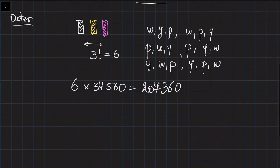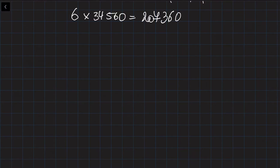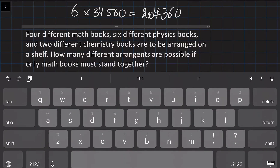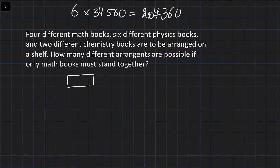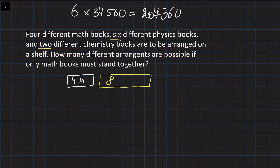We are going to solve another problem, very similar to this one. Again, four different math books, six different physics books, and two different chemistry books. We need to find the number of rearrangements where the math books must stand together only — it is not necessary to make blocks for the chemistry books or the physics books. In this case, we make two blocks: one block with only the four math books, and another block with all the other books — six physics plus two chemistry, so eight other books.